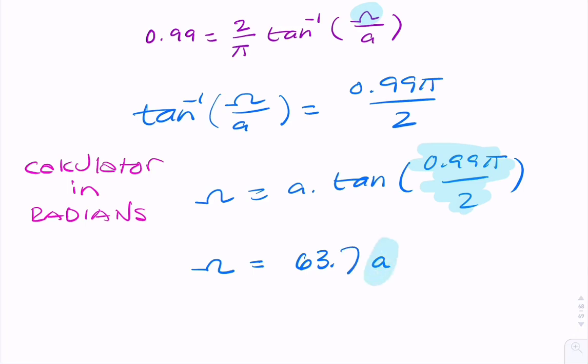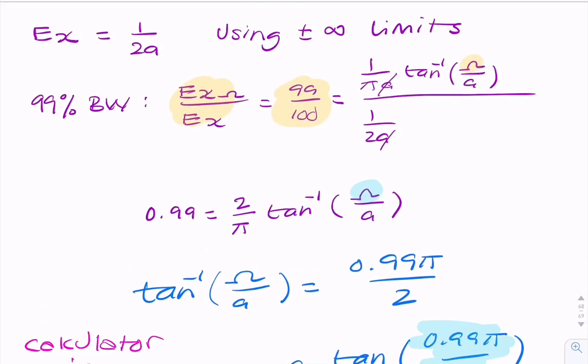So it's still in terms of a, because a is not given in the question. And that will be in radians per second. And if we wanted to find that in hertz, because typically that's what we're looking for, we would take omega and divide by 2 pi.